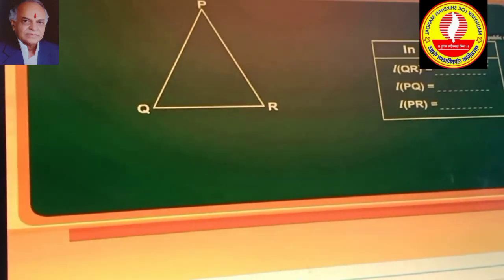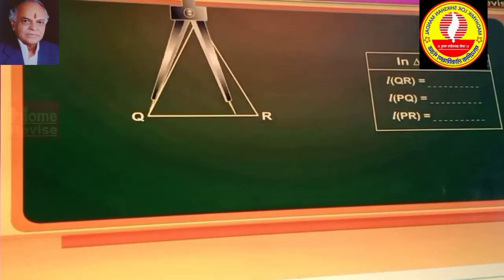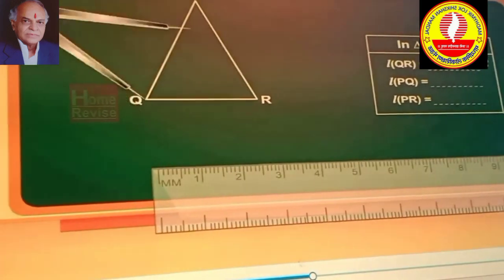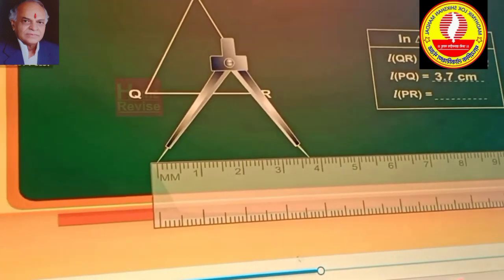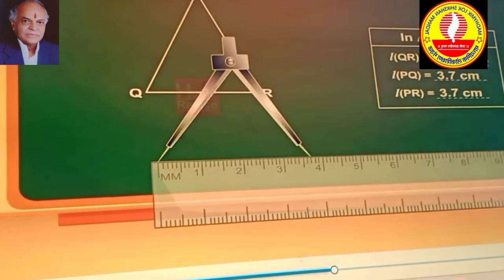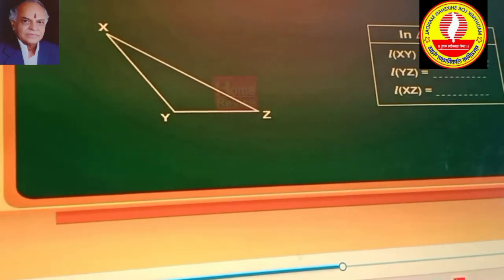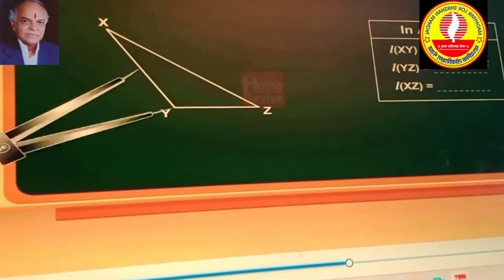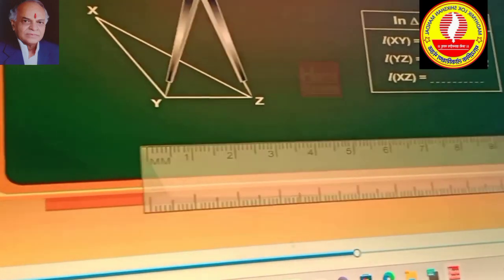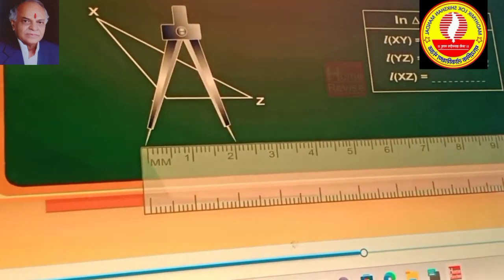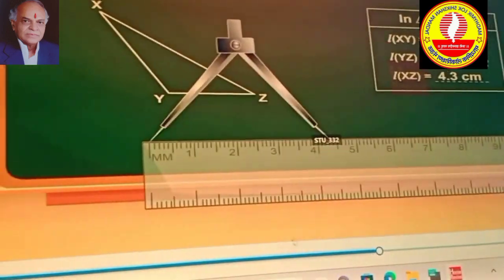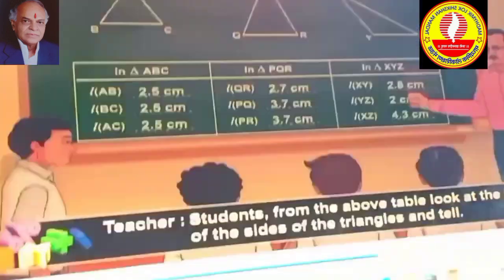In triangle PQR, length QR is equal to 2.7 cm, length PQ is equal to 3.7 cm. In triangle XYZ, length XY is equal to 2.8 cm, length YZ is equal to 2 cm, length XZ is equal to 4.3 cm.